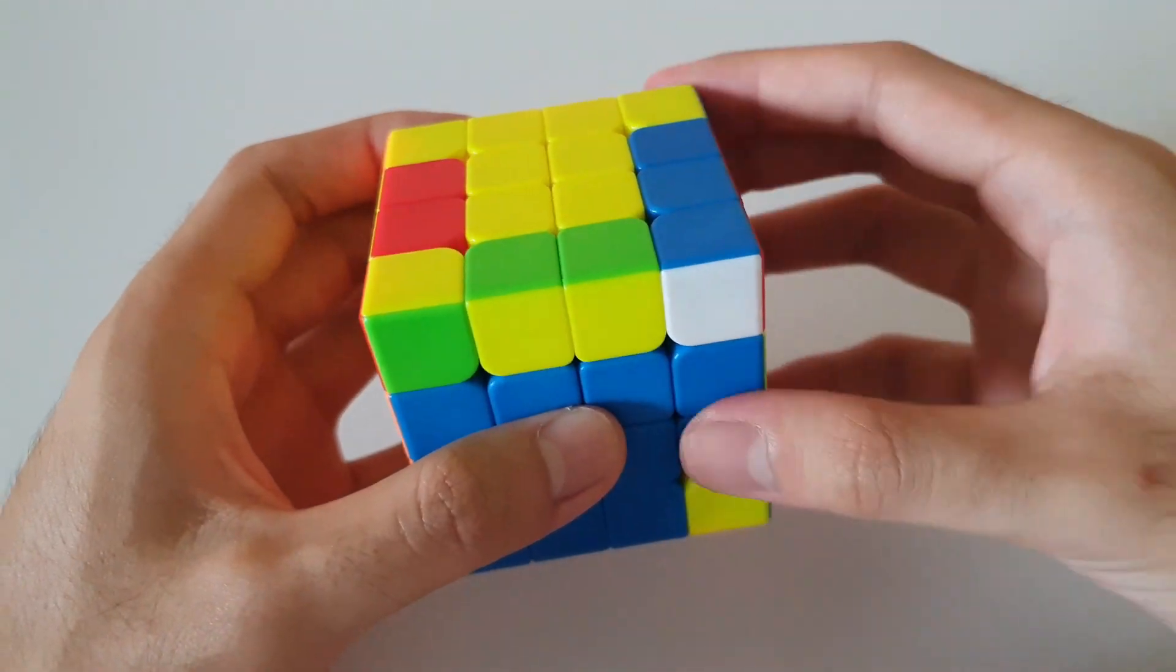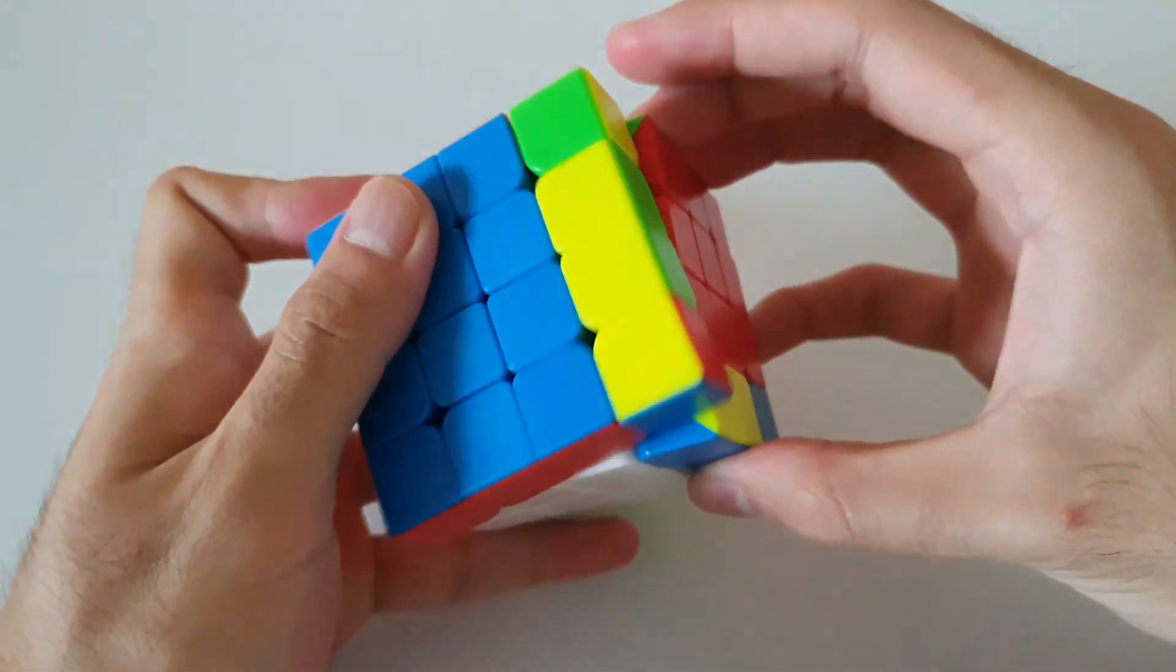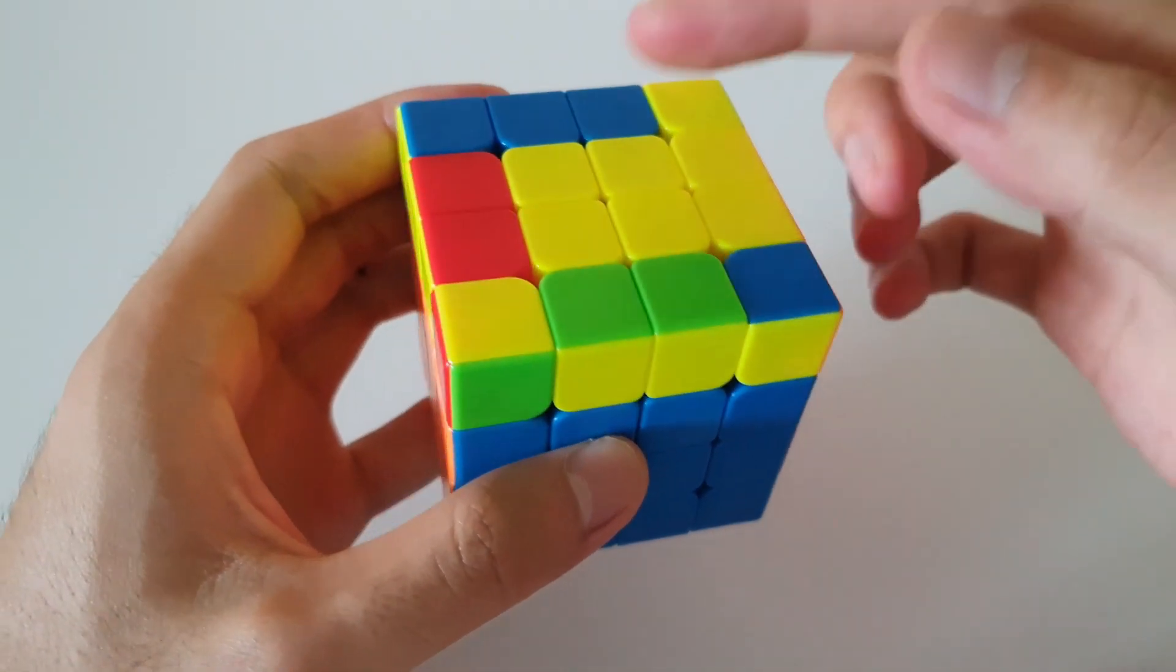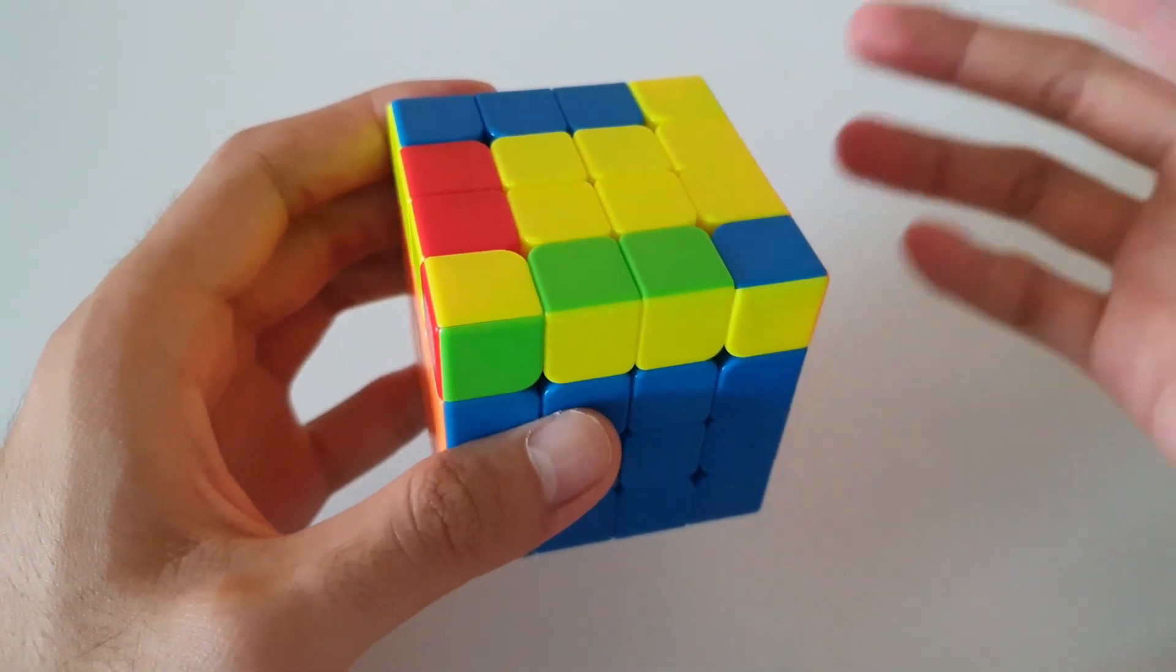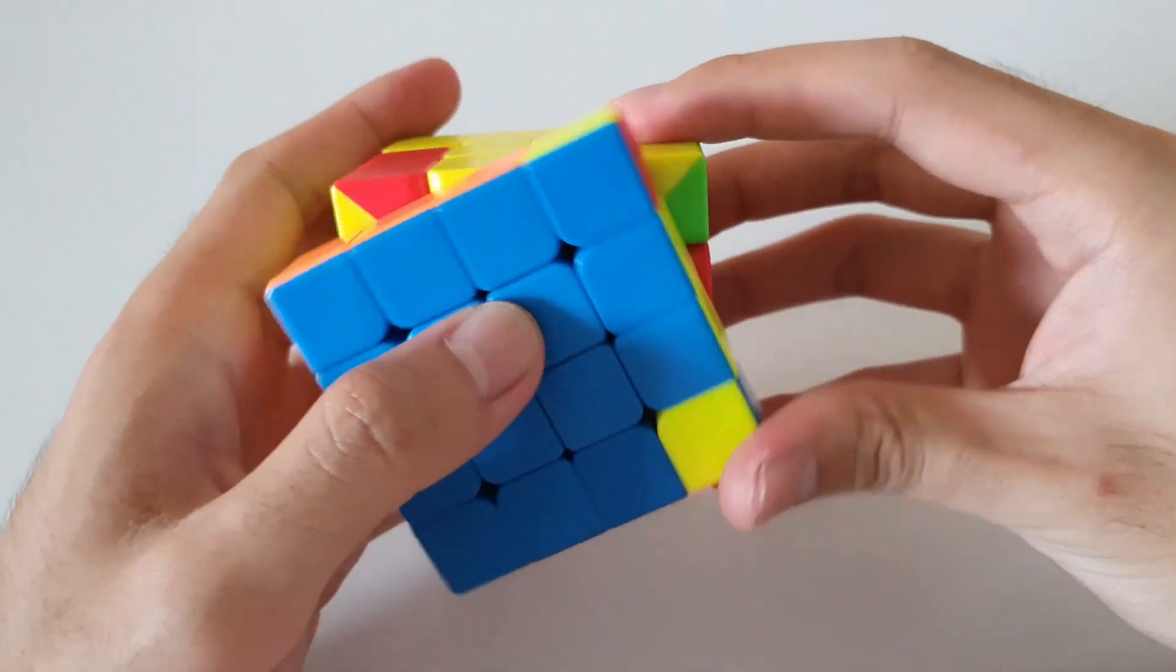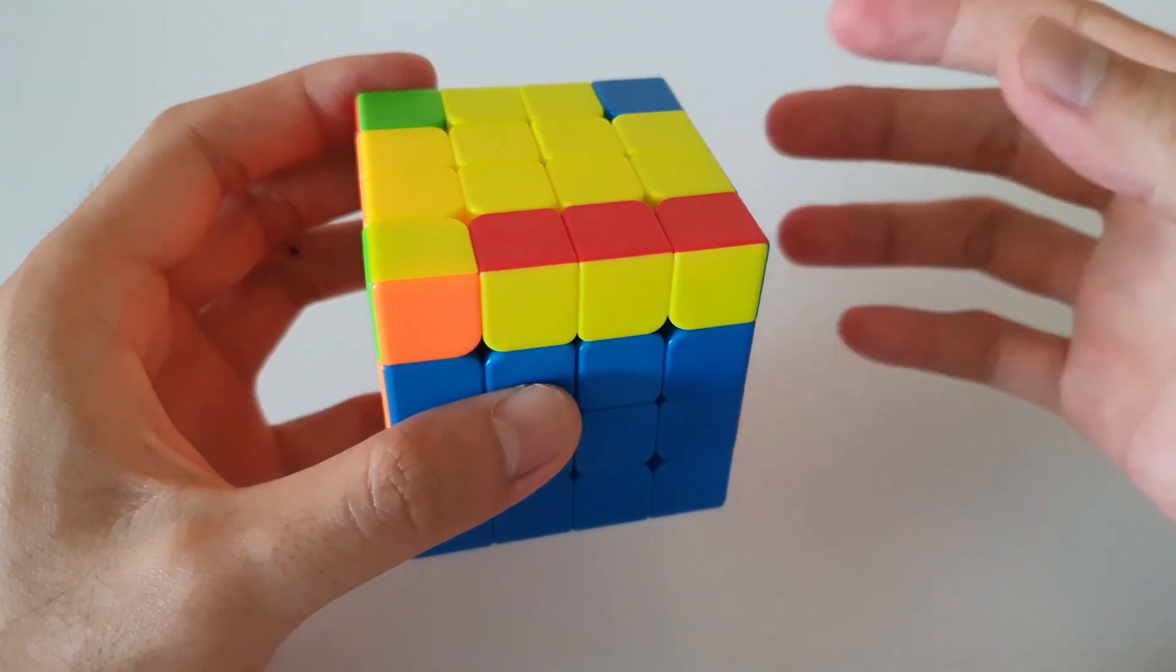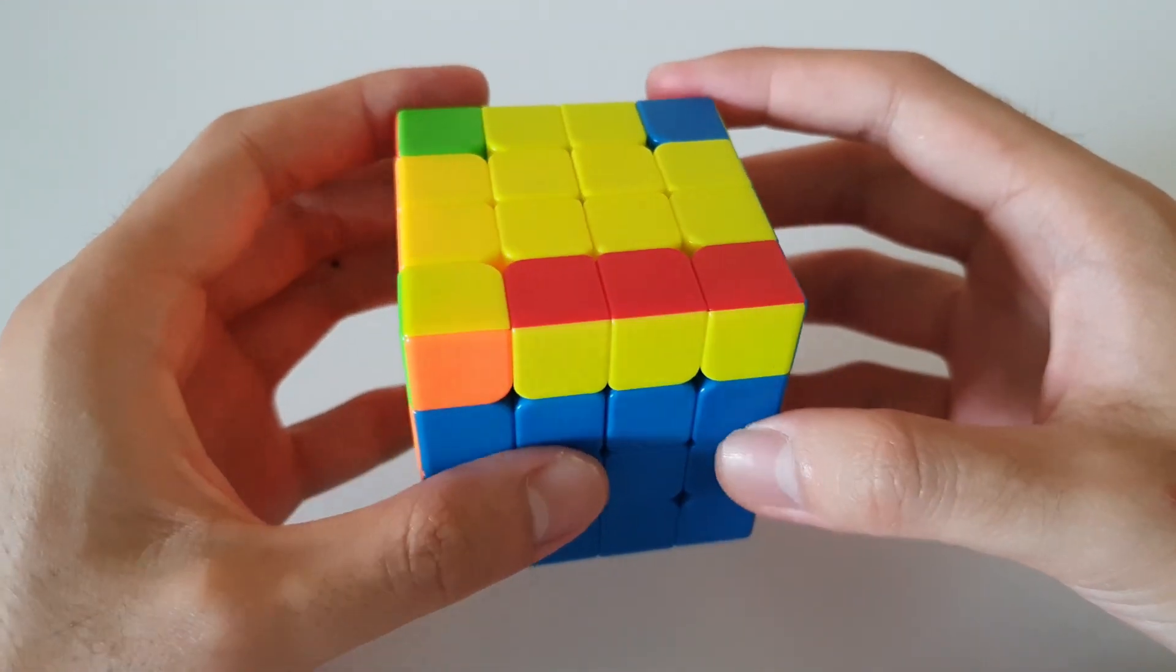Usually, when we insert with a sledge hammer, we can get three oriented edges. Otherwise, if we just insert normally, we'll get one oriented edge. So either way, we'll have to do OLL parity, but it's usually better if we can get more oriented edges. And so after we do OLL parity, if you know two-look OLL, then you can use one of those algorithms.